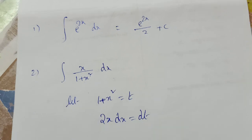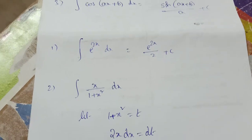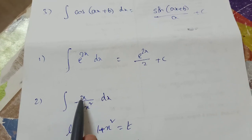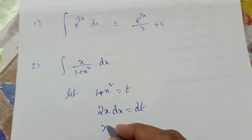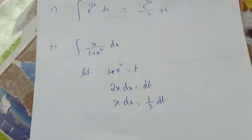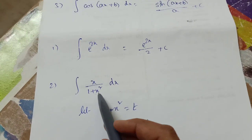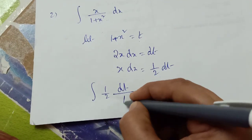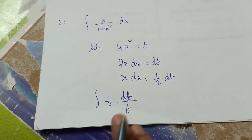Now do the derivative: d/dx of (1+x²) = 2x dx = dt. We need x dx, so x dx = (1/2)dt. Applying the substitution: the integral of x dx divided by (1+x²) becomes (1/2)dt divided by t. Do not cancel dt with t — they are different.